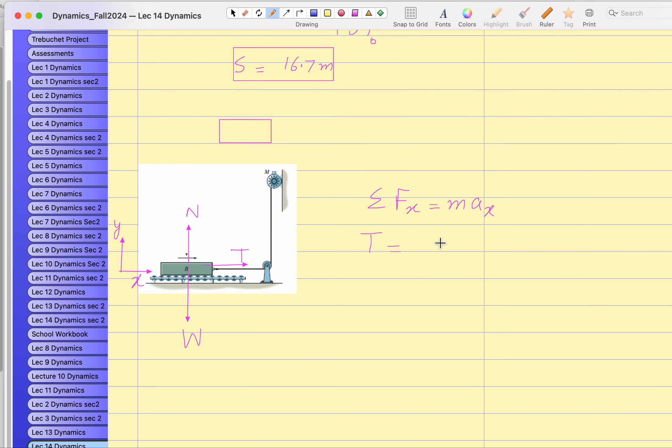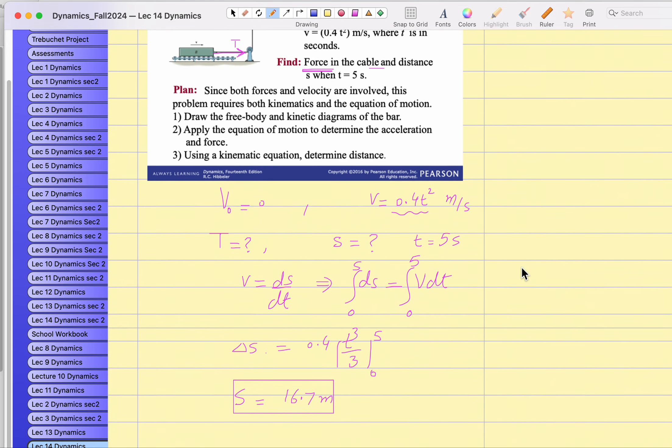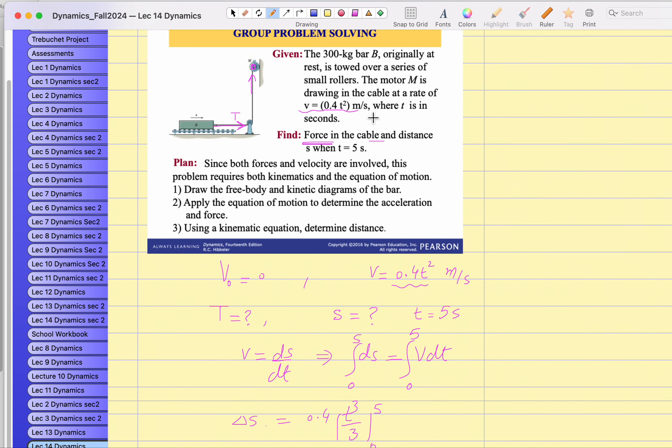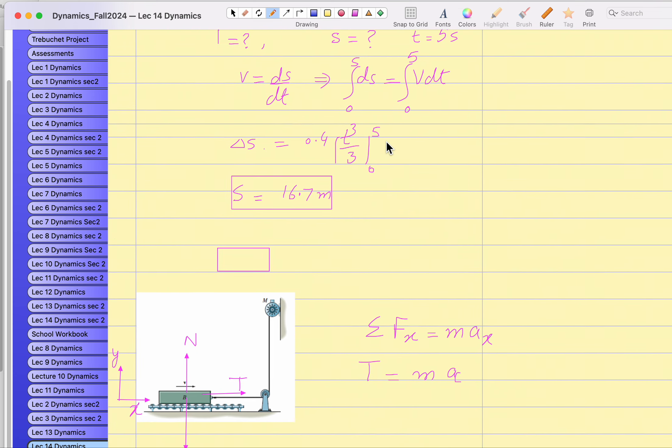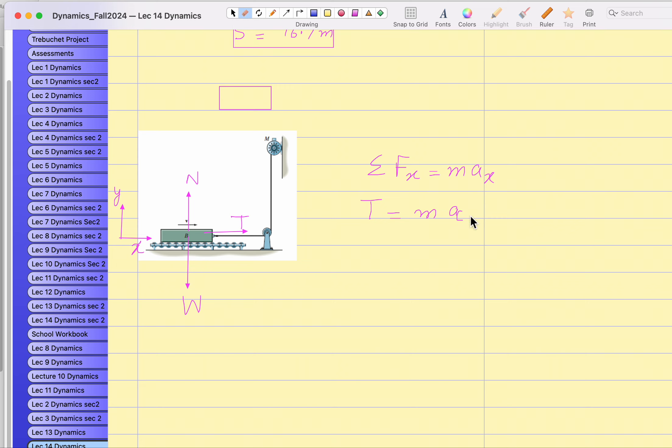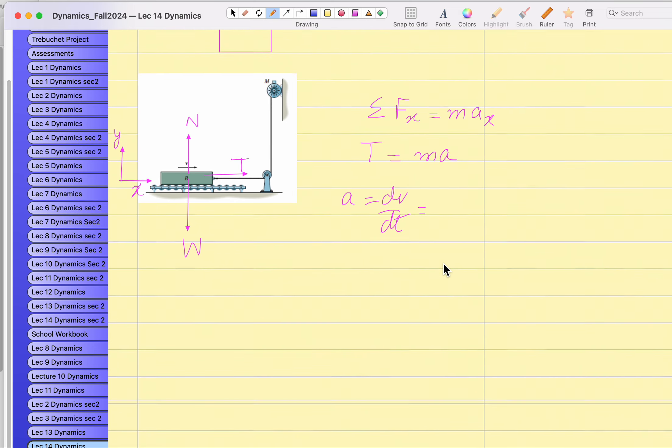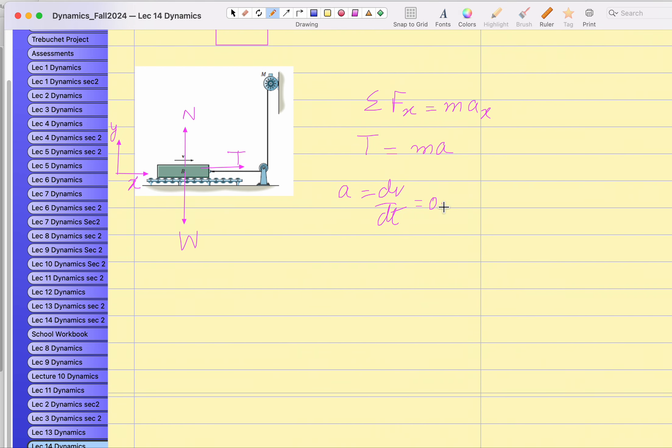There is just one force in the X direction, which is tension T in the cable, equals to mass times acceleration. Acceleration is not given directly, but if you take a look, velocity expression is given. How can you find out the acceleration if the velocity expression is given? You can find out by taking the time derivative of velocity expression. The velocity expression is 0.4t², so you have to take the time derivative, which is 0.8t.